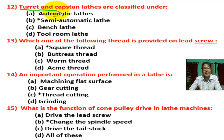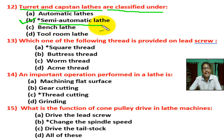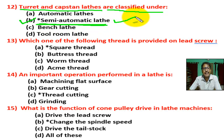There are four options. Correct answer is B — semi-automatic lathe. Turret and capstan lathe are classified under semi-automatic lathe.